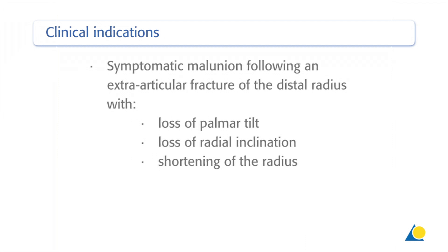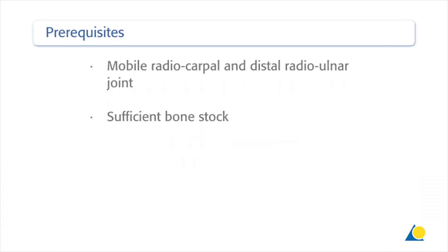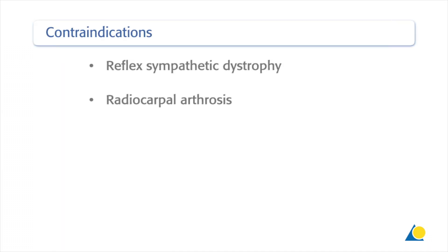The clinical indication is a symptomatic malunion following an extra-articular fracture of the distal radius with a loss of palmar tilt, a loss of radial inclination, and a shortened radius. The prerequisites for this osteotomy are a mobile radiocarpal and distal radial ulnar joint and sufficient bone stock. The contraindications are reflex sympathetic dystrophy and radiocarpal arthroses.